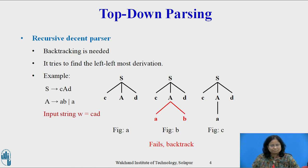Recursive Descent Parser: Backtracking is needed, i.e., if a choice of a production rule does not work, we backtrack to try other alternatives. It tries to find the leftmost derivation. It is a general parsing technique but not widely used.